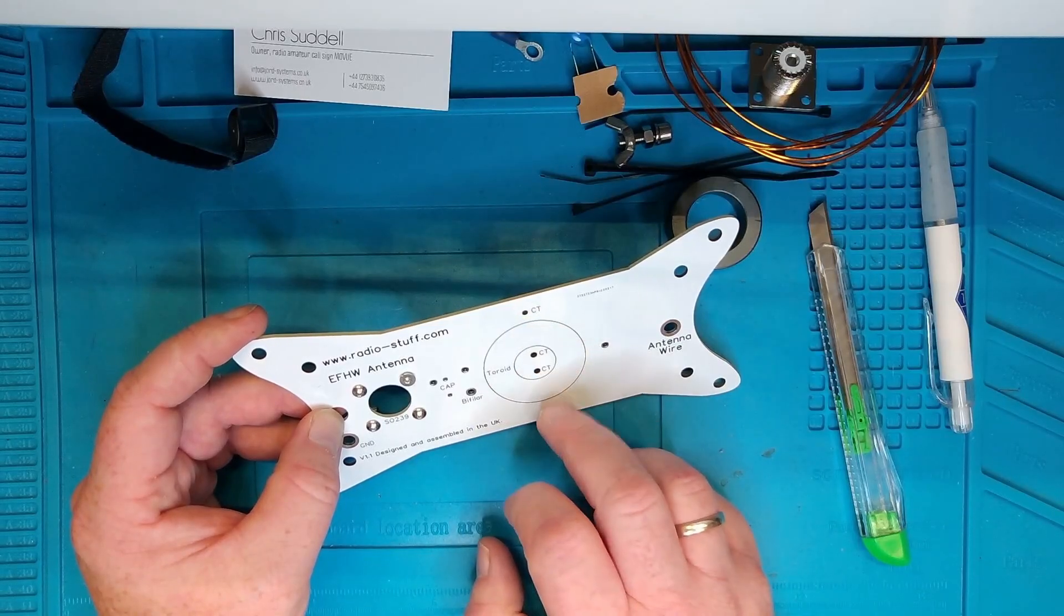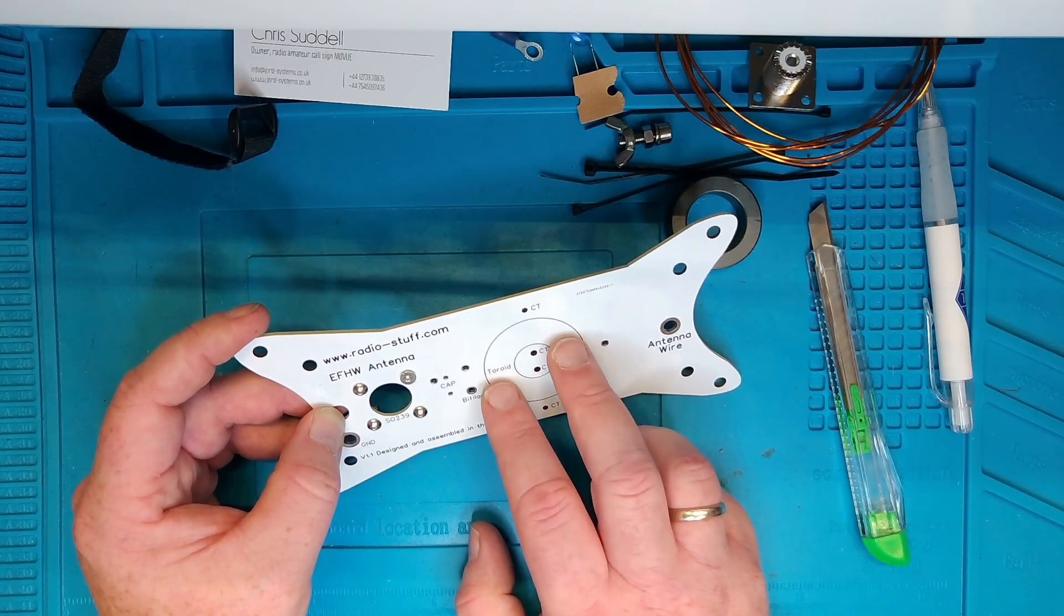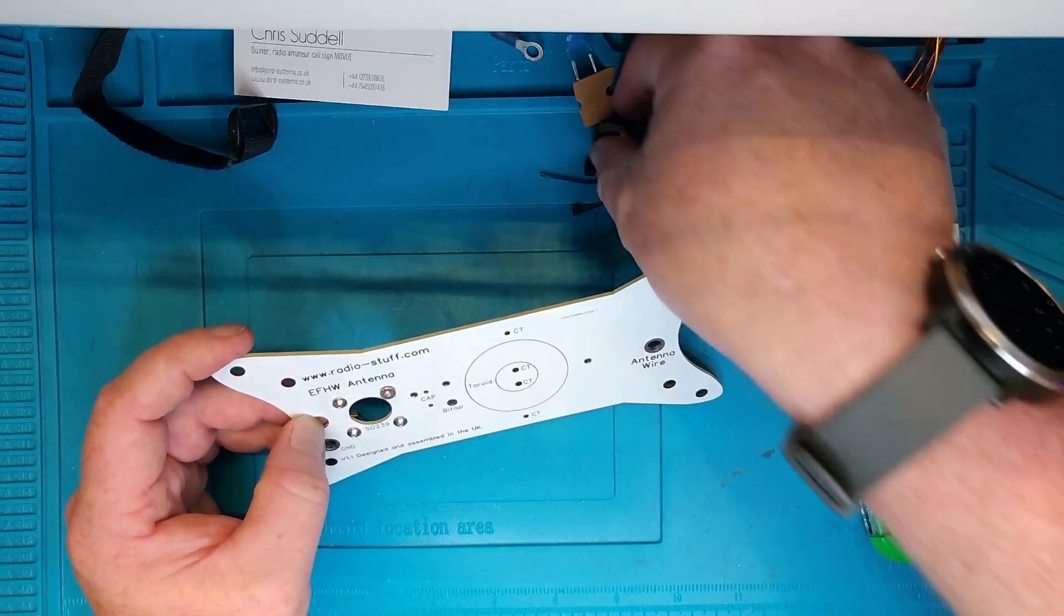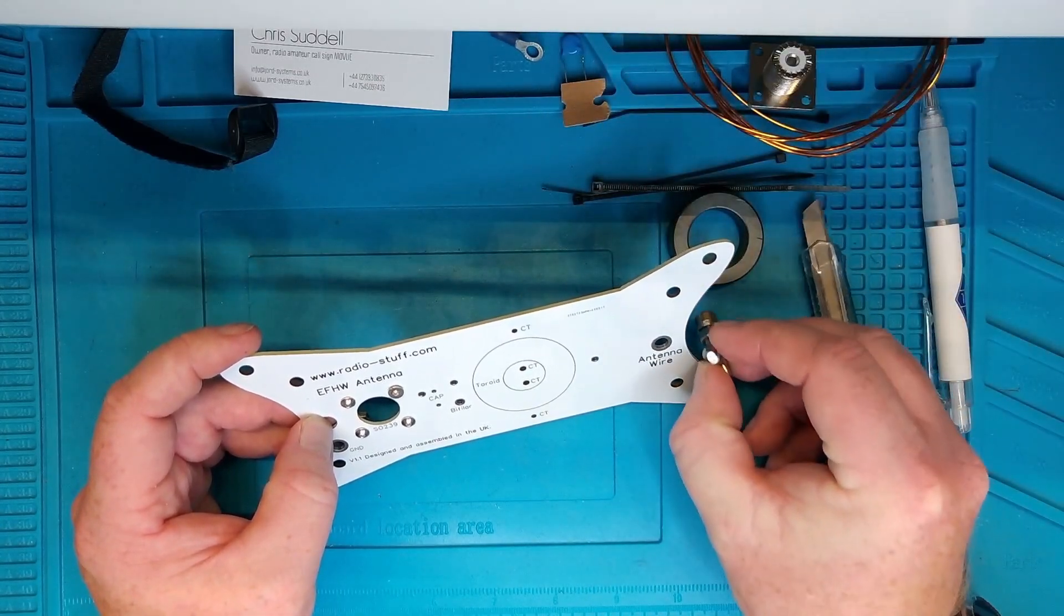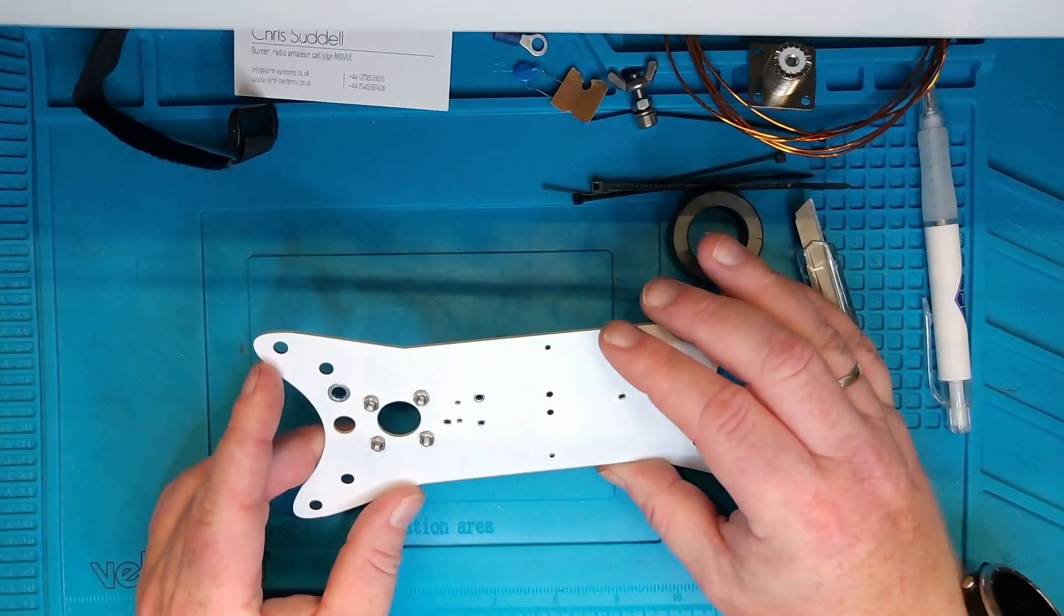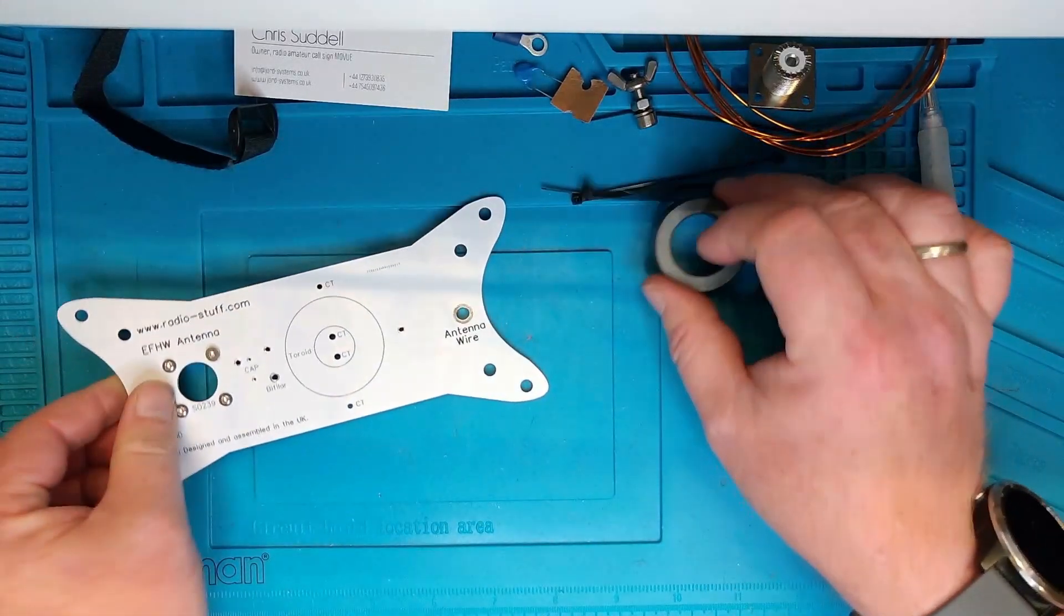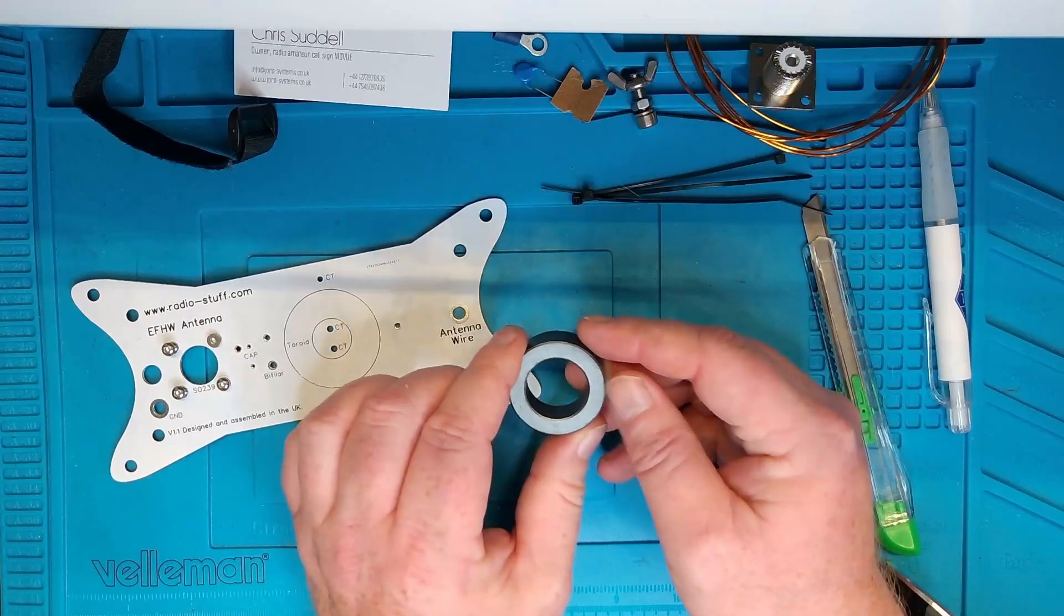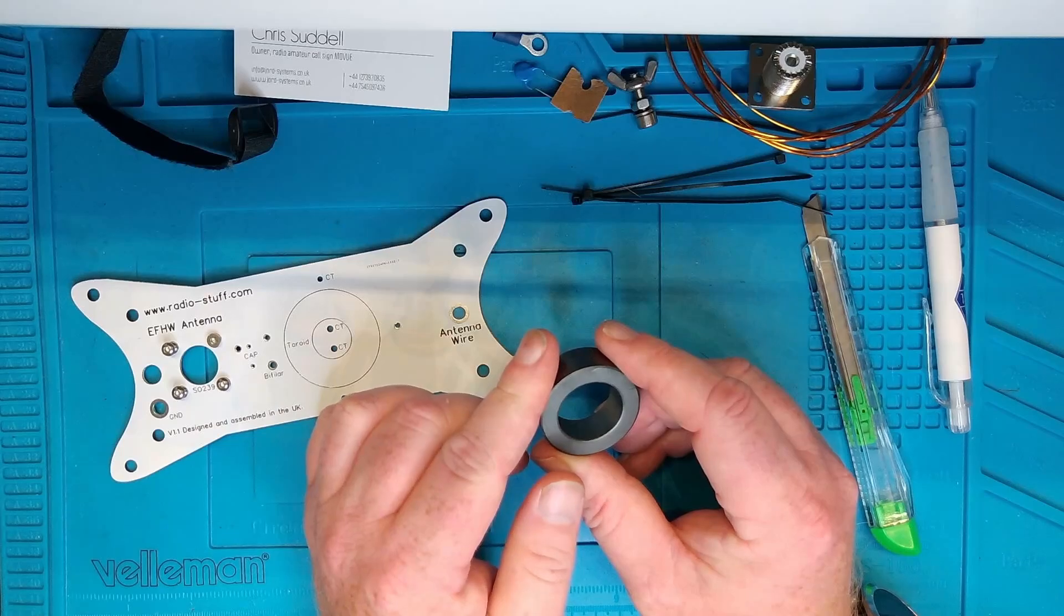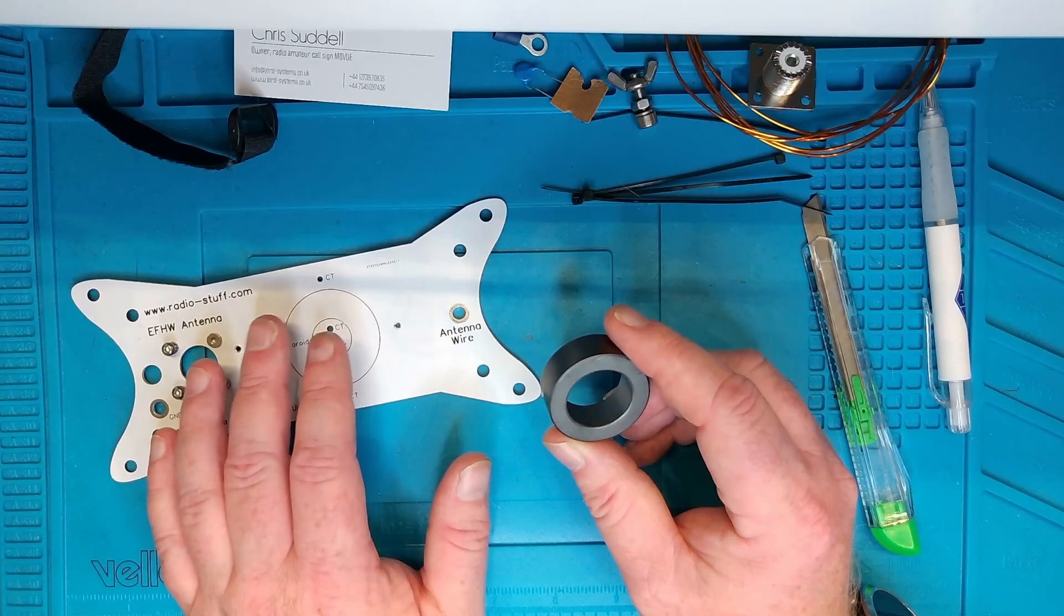Put the capacitor in here, and the windings for the toroid go here, here, and here. Some room for cable ties to fit the toroid to the PCB. And then space for the antenna wire here, with this piece of hardware just going inside the hole here.